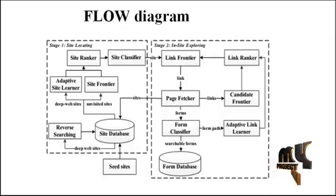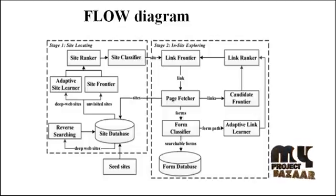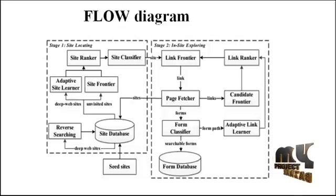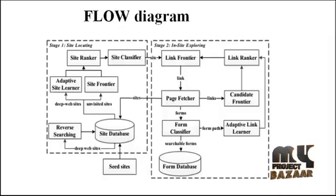The site ranker puts a rank for every URL using the site classifier algorithm. The site classifier separates each and every website using URL tokenization. URL tokenization separates each URL by domain values. The domain is separated by the second stage of the crawler. In the second stage, the inside exploring has been explored, checking each and every link from the href tags continuously.